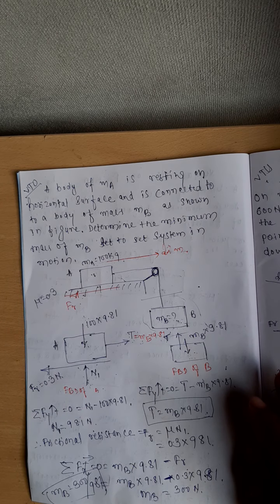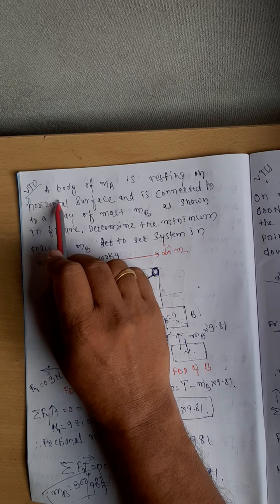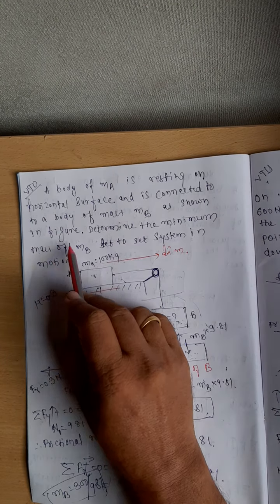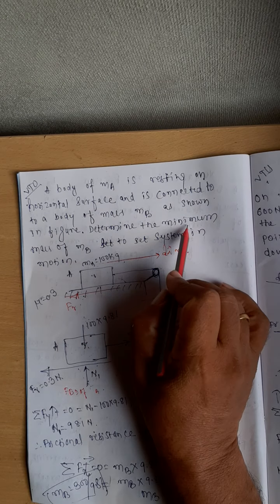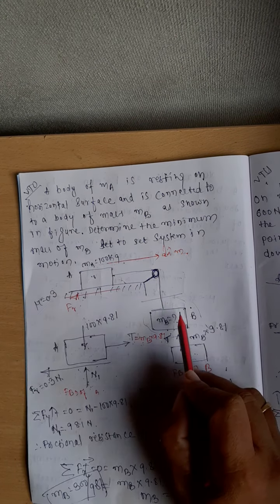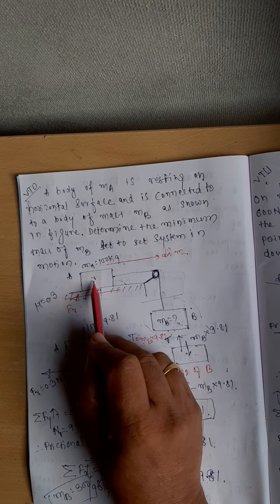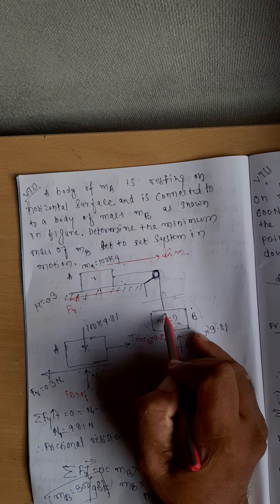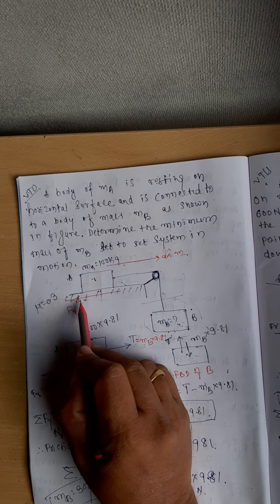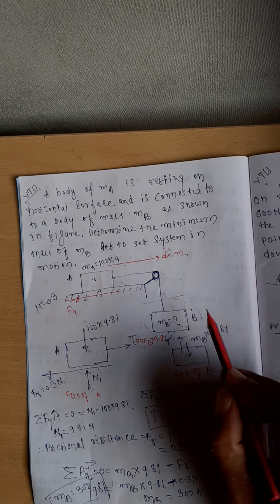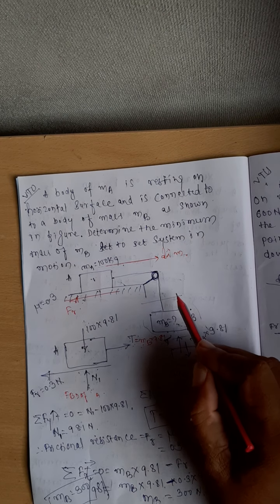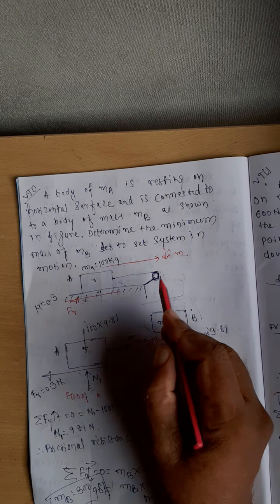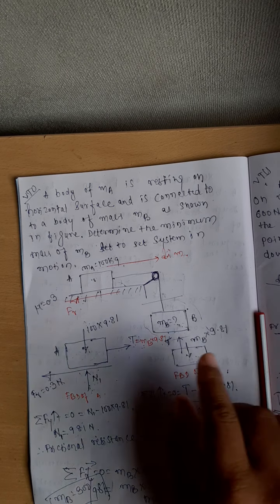Apply the equations of equilibrium to get the required solution. Here is the first problem: a body of mass mA is resting on the horizontal surface and is connected to a body of mass mB as shown in the figure. Determine the minimum mass of block B. Block A is resting on the horizontal surface; the thread passes over a frictionless pulley, so the tension in the thread will be constant.